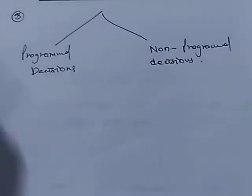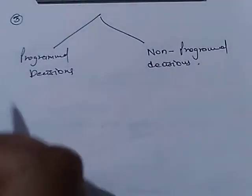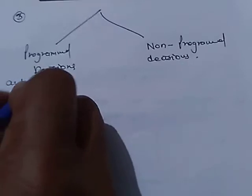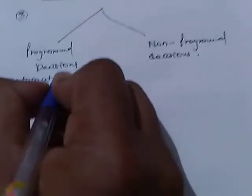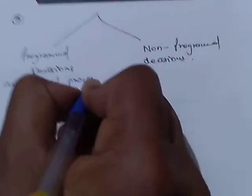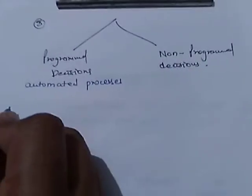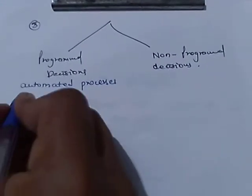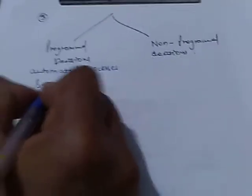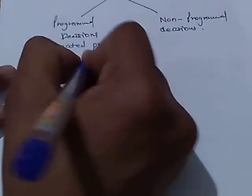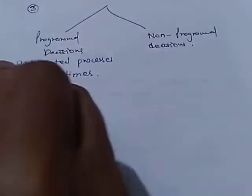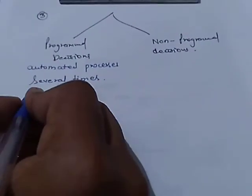Programmed decisions are basically automated processes. These types of decisions have been taken several times. These decisions follow some guidelines or rules.